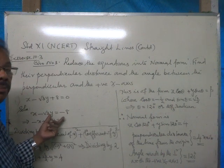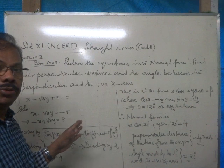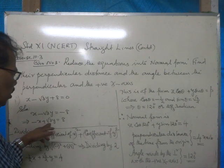We divide the whole equation by minus 1 because the perpendicular distance will be positive. So, negative x plus root 3y equals 8.